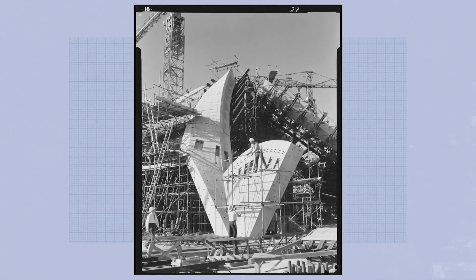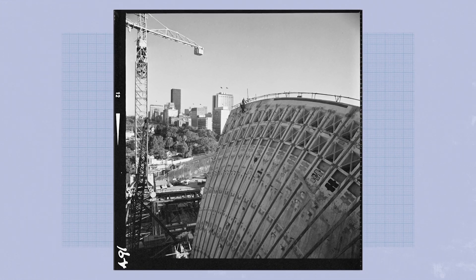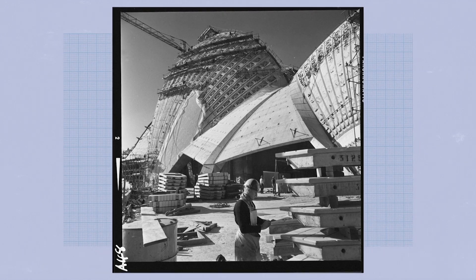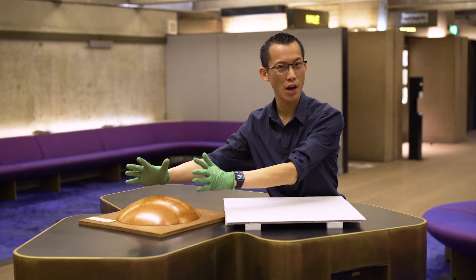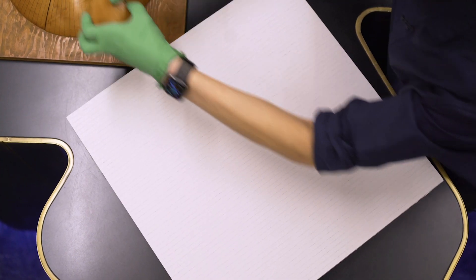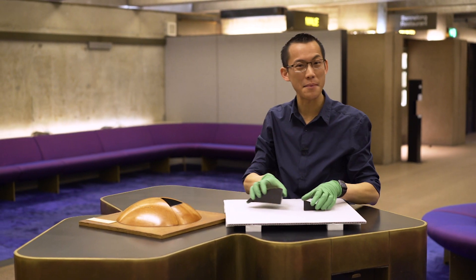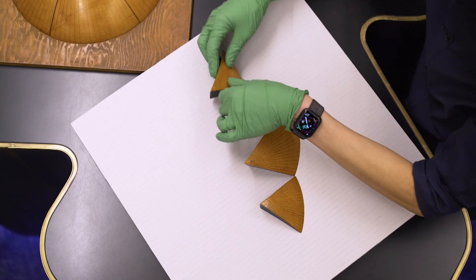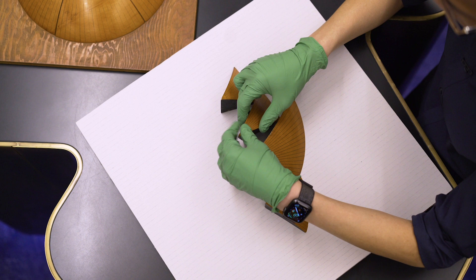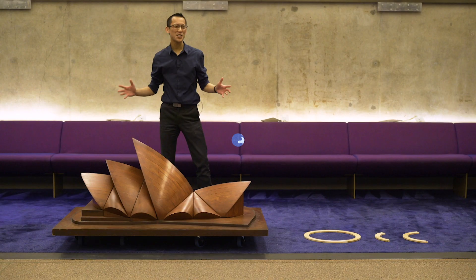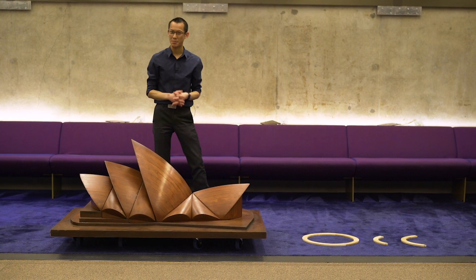Building the shell from sections of a sphere made construction possible through an industrialised process. But how do you create the different sails out of one simple shape? Utzon's key insight was that you could take the uniform curvature of a sphere and nonetheless cut out many different shapes from it. Just like a single musical instrument can play many different songs, so too can a single sphere make many different shells. And this is how the iconic sails were ultimately created. This isn't just visually striking — it's also the secret of how each of the shell's components was mass produced.